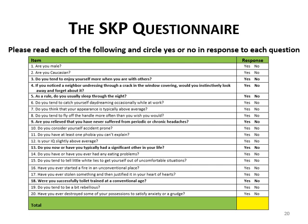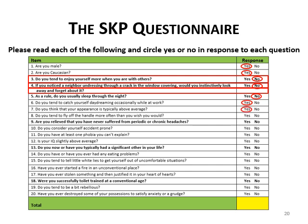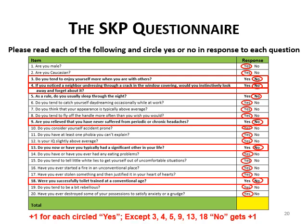The SKP questionnaire you'll be completing this week is on Canvas. Please follow the instructions. If you haven't done so already, make sure you grade it — scores can range from 0 to 20. Make sure you both grade it and answer the questions.